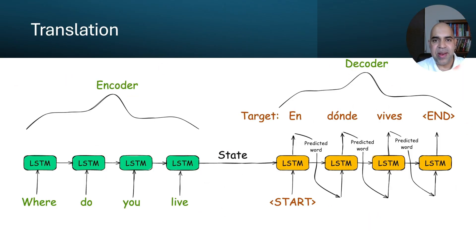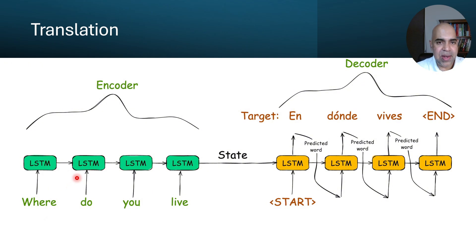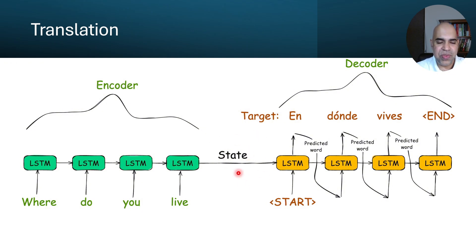Here we have an encoder-decoder architecture using LSTM for machine translation. These four LSTM blocks are actually just one cell — it is showing the unfolded version for the sentence "where do you live?". The output hidden state and cell state of "where" would be fed back into the LSTM when the word "do" is an input. The cell state and hidden state output of "do" will be used for the next iteration when the input word is "you", and so on. The final context vector is a combination of the final cell state output and the hidden state output for the LSTM that received the input sequence "where do you live?".